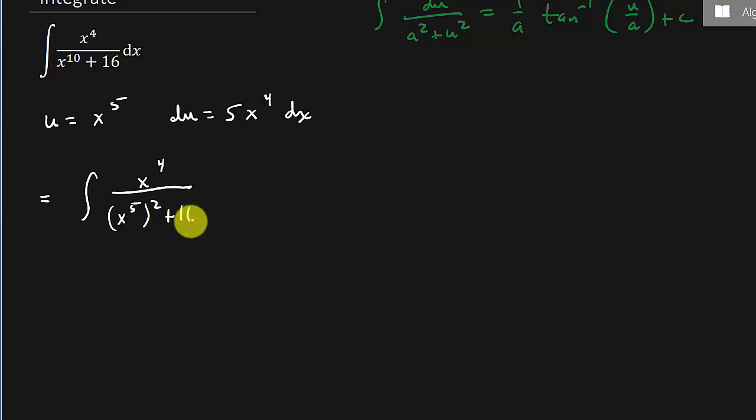Okay, see I want this u squared here. So that's why I let u equal x to the fifth. See that, because x to the tenth is x to the fifth squared.